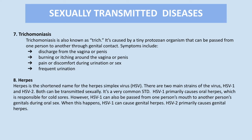Trichomoniasis, also known as TRIC, is caused by a tiny protozoan organism that can be passed from one person to another through genital contact. According to the CDC, less than one-third of people with TRIC develop symptoms. When symptoms do develop, they may include discharge, burning or itching, pain or discomfort during urination or sex, and frequent urination. There are many more sexually transmitted diseases, but we will end with herpes. The CDC estimates more than one out of six people ages 14 to 49 have herpes in the United States.